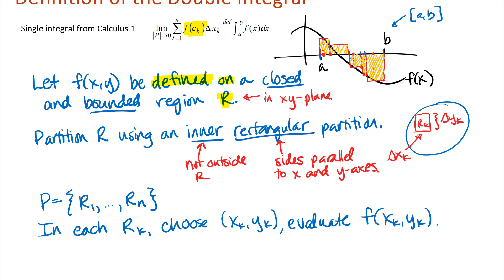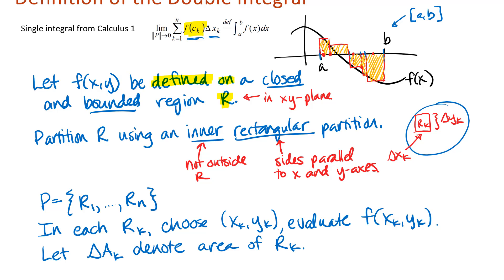Once we have the function output, we multiply it by the size of the piece, just as in the single integral. We let ΔAk denote the area of the k-th rectangle Rk, and as shown in the picture, that area can be written as Δxk times Δyk.